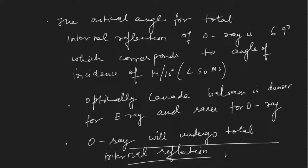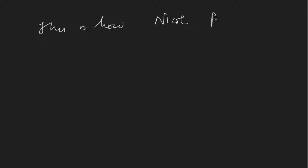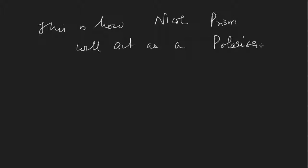So this is how the Nicol prism acts as a polarizer — by causing total internal reflection of the O-ray and allowing only the E-ray to exit. In the next lecture, we will see how the Nicol prism can also act as an analyzer.